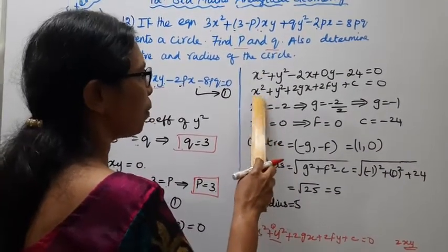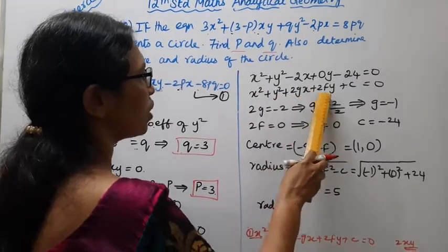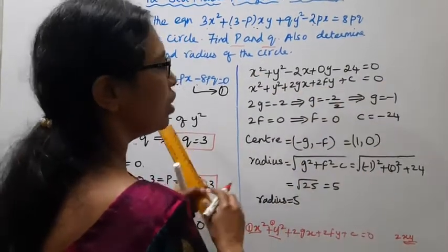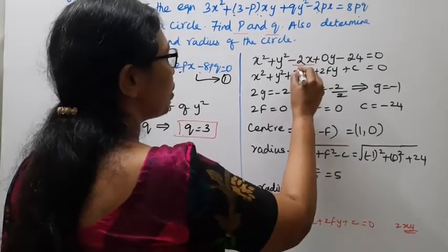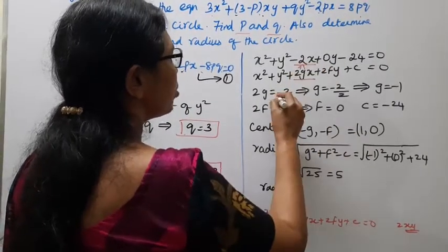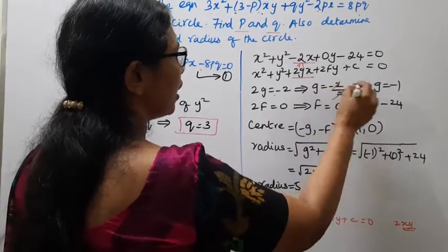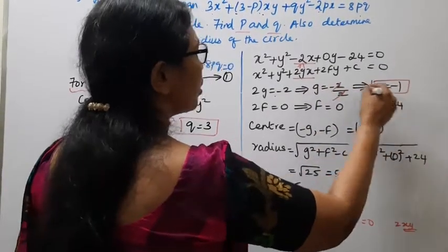Comparing x² + y² + 2gx + 2fy + c = 0 with our equation: 2gx corresponds to -2x, so 2g = -2, therefore g = -2/2 = -1.